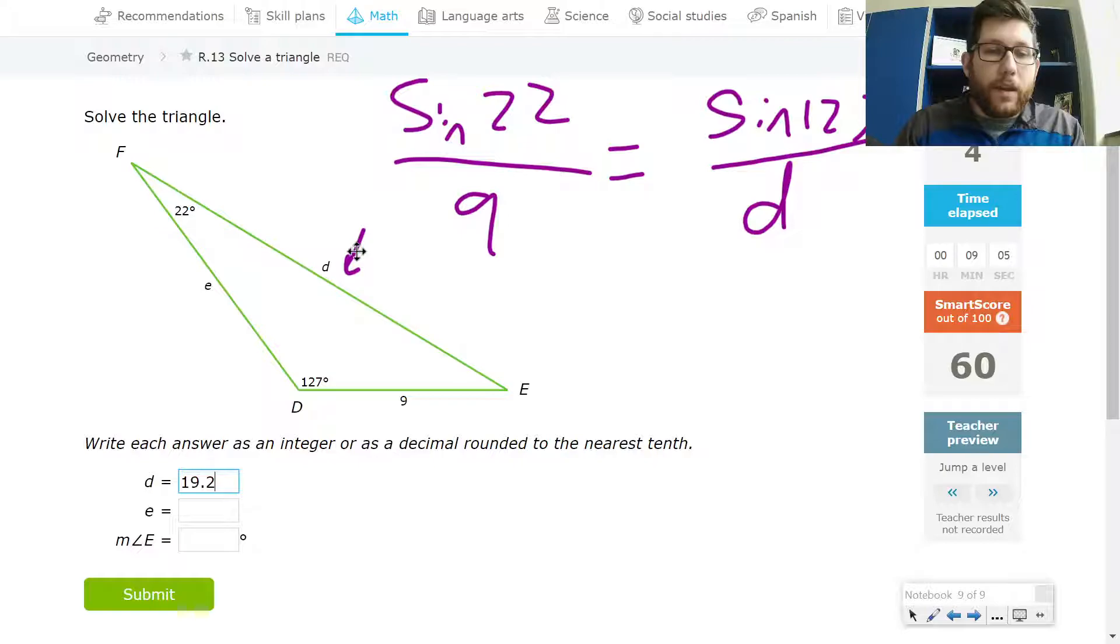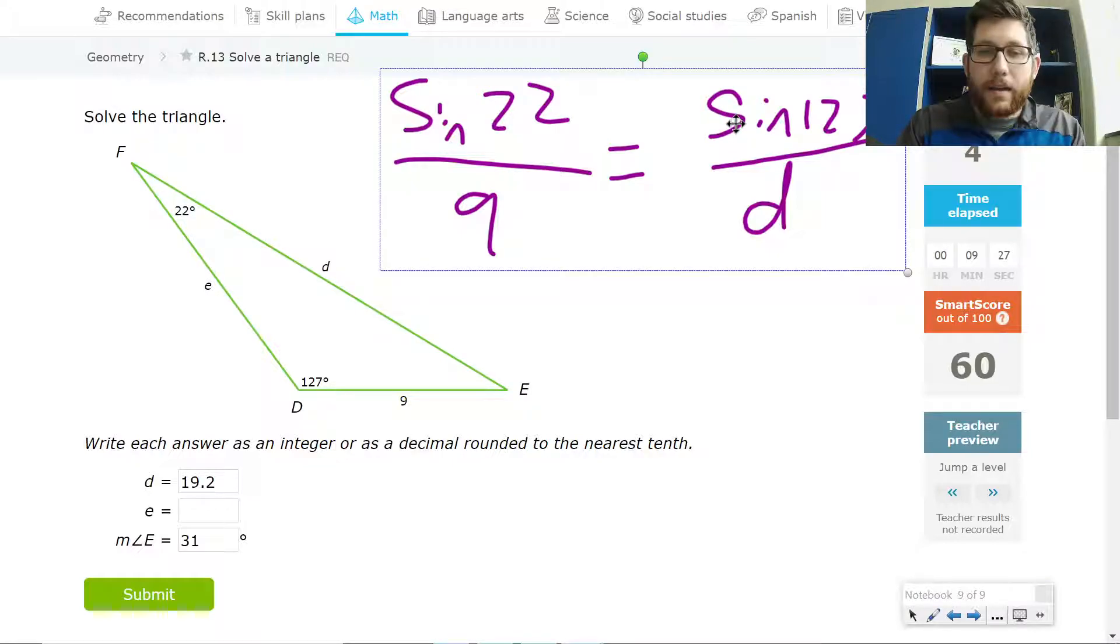What I would do to solve for the next side, well, first thing I'd do is solve for this angle E. So I'd subtract these guys out of 180. So 180 minus 22 minus 127. I'd get 31 for angle E.